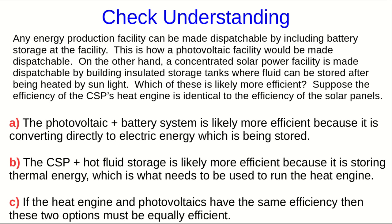We can make any energy production facility dispatchable if we include large enough battery storage — that's how you would do it for a photovoltaic facility. A concentrated solar power facility does it differently, using insulated storage tanks. So which is likely more efficient? To compare apples to apples, let's assume the solar panels are as efficient as the heat engine in the CSP plant, so that any difference in efficiency comes from the storage method itself.